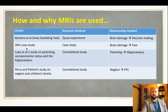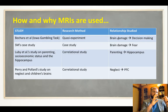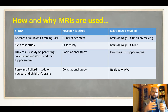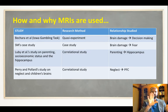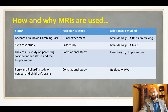A good way to understand how and why MRIs are used is to look at the relationships studied. In the first two studies we're looking at the brain affecting behavior — damage to the brain affecting decision-making or fear. In the latter two studies, even though they're correlational so we can't conclude a causal relationship, we're hypothesizing a link between the behavior — parenting and neglect — and the brain, specifically the hippocampus and the prefrontal cortex.